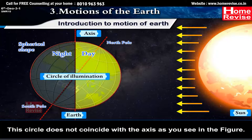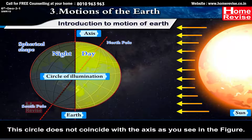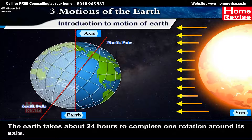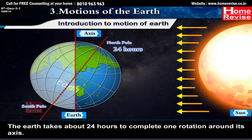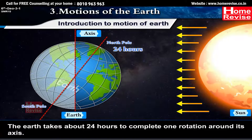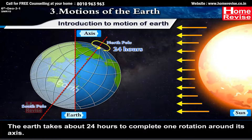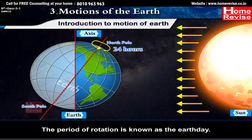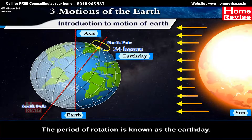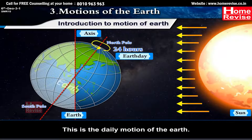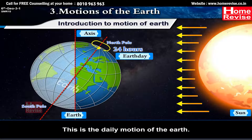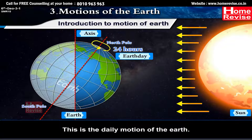The circle that divides the day from night on the globe is called the circle of illumination. This circle does not coincide with the axis, as seen in figure 3.2. The Earth takes about 24 hours to complete one rotation around its axis. The period of rotation is known as the Earth Day — this is the daily motion of the Earth.